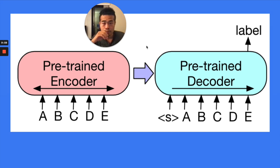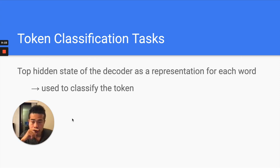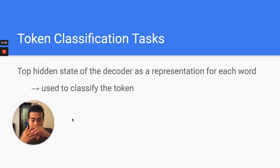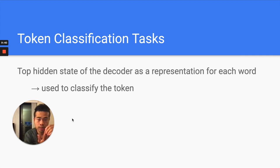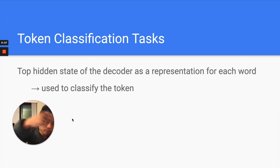For token classification tasks like named entity recognition, they use the top hidden states of the decoder. You put the input — say 'I have a pen' — into the encoder and decoder, then take the last layer's hidden representation as the representation for each given token, and put that into classification layers. It's not very different from BERT, but it's much less intuitive because you need to translate from original sequence to another sequence and get the representation of each token.